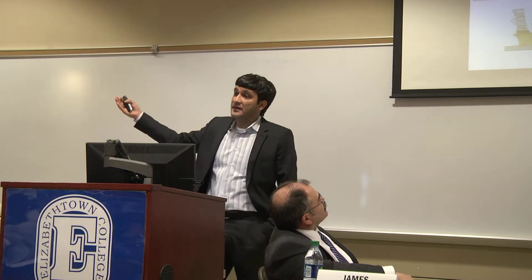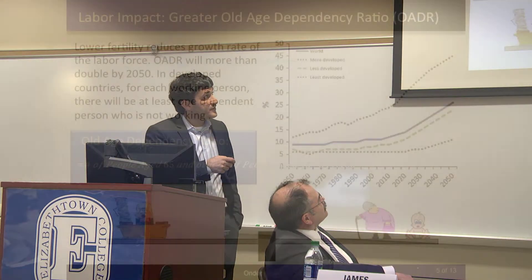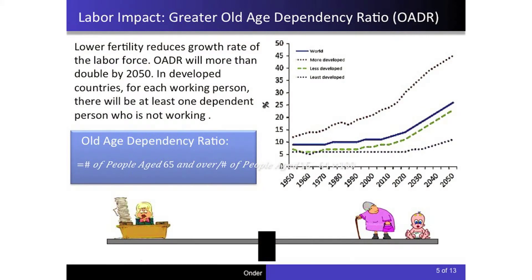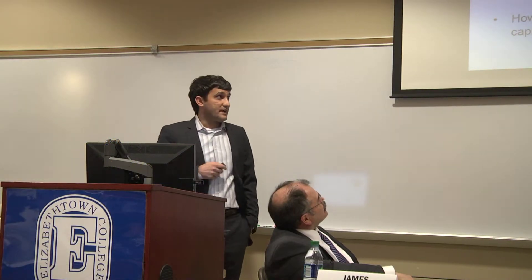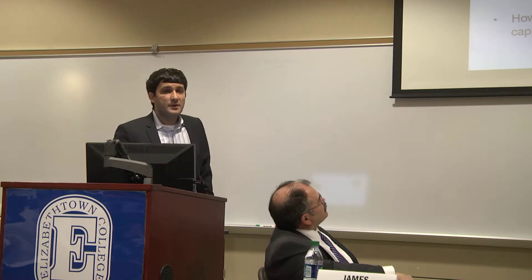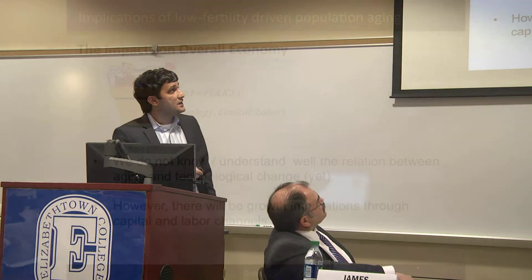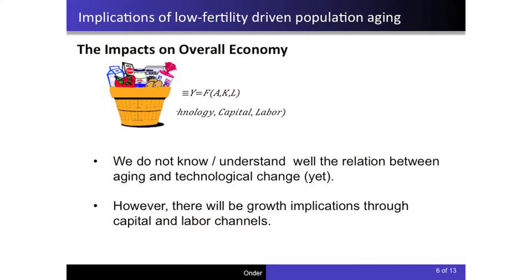When you have both increasing longevity and decreasing fertility, the numerator increases while the denominator decreases, pushing the old-age dependency ratio even further. This means the old-age dependency ratio will skyrocket in the future. In a typical economy, we can approximate goods and services produced with a technology production function Y = AKL, which has three components: technology A, capital K, and labor L.